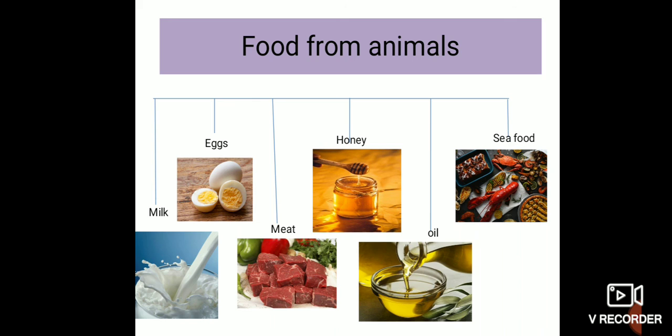Next is oil from animals. We also get oil such as cod liver oil from fish — it is highly nutritious and good for health. From animal sources, only fish oil is commonly used. People who live near the coast also use seafood as meat — like fish, crab, shrimps, etc.